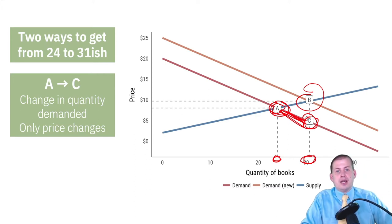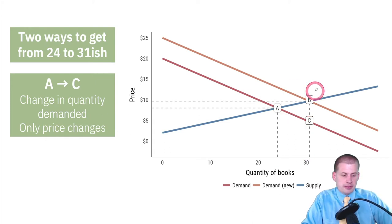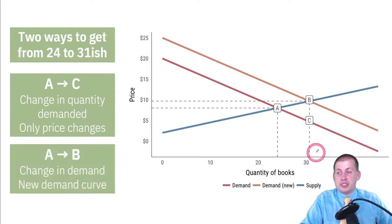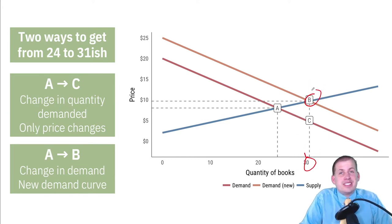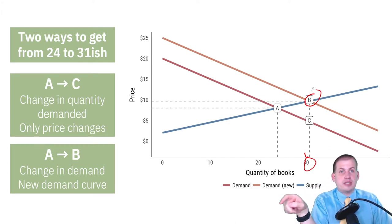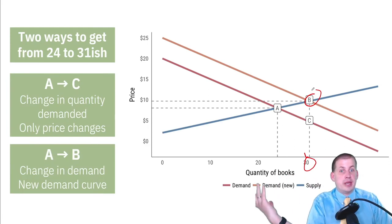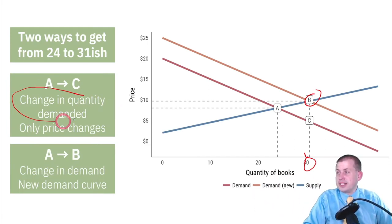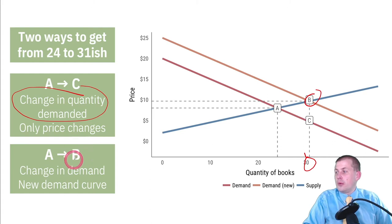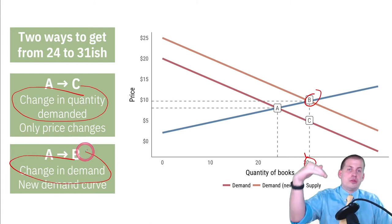That is a change in quantity demanded — people are just responding to lower prices and buying more. From the other side, if more books are being sold at a higher price, that's a sign of an actual structural change where more people want books. Booksellers can raise the price and more people still buy — something happened in the market to change demand. So the distinction is: change in quantity demanded means moving along the existing demand curve; change in demand means a whole new demand curve.